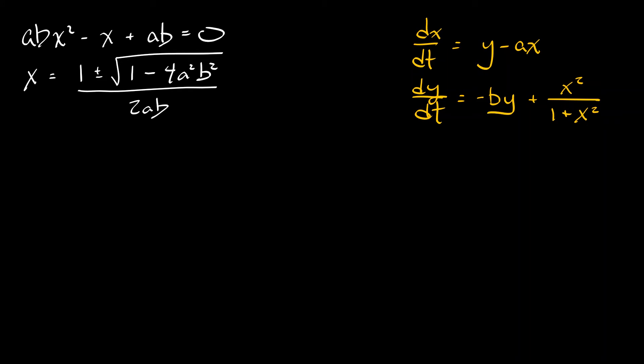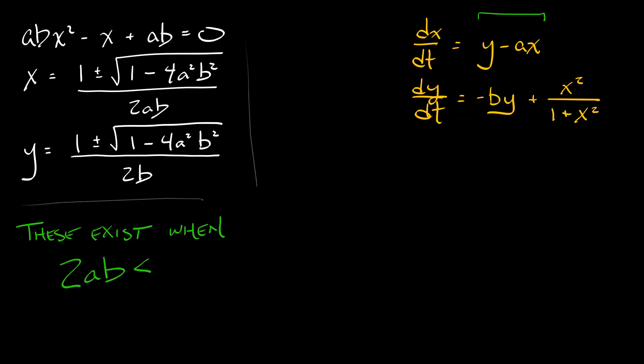Recalling from our system that y equals ax, we get the value of y equals 1 plus or minus square root of 1 minus 4a²b² all over 2b.